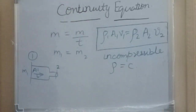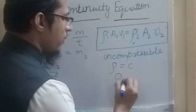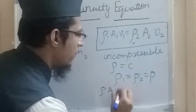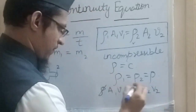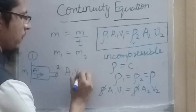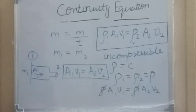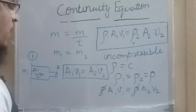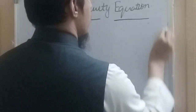For an incompressible fluid, rho1 equals rho2 equals rho, so rho cancels out from both sides. The equation simplifies to A1 V1 equals A2 V2. This is the continuity equation we generally use because we assume the fluid is incompressible. The products A1 V1 and A2 V2 remain constant.